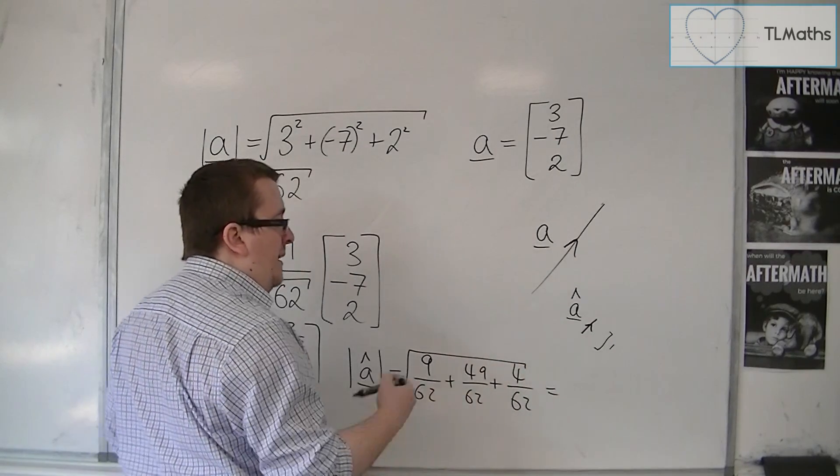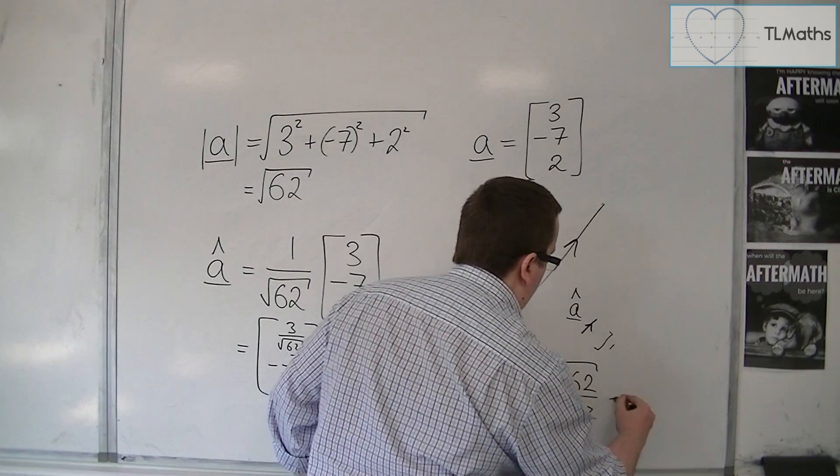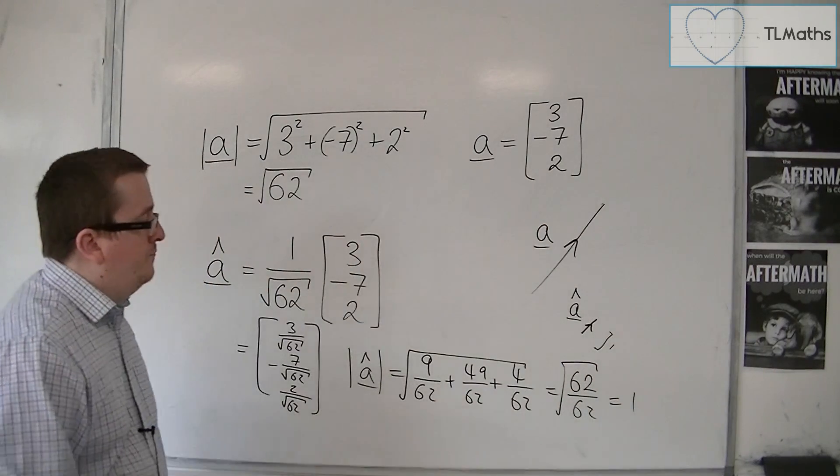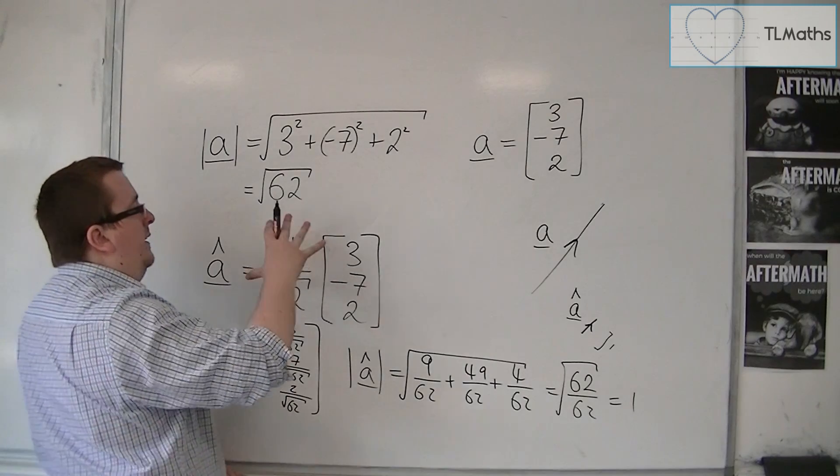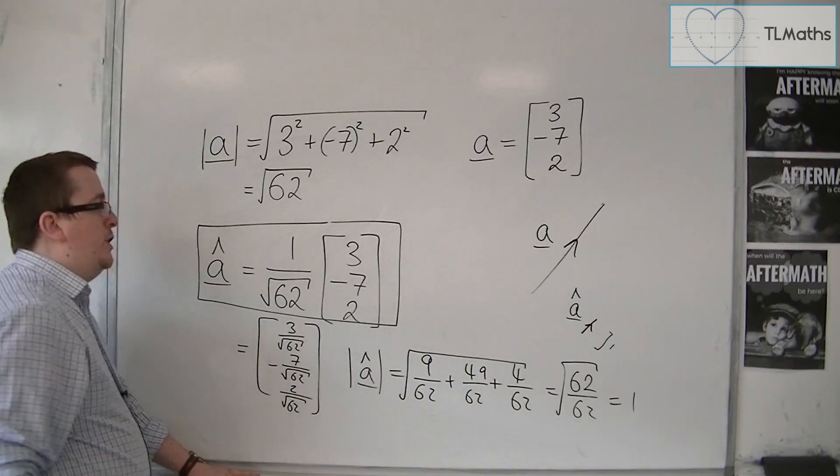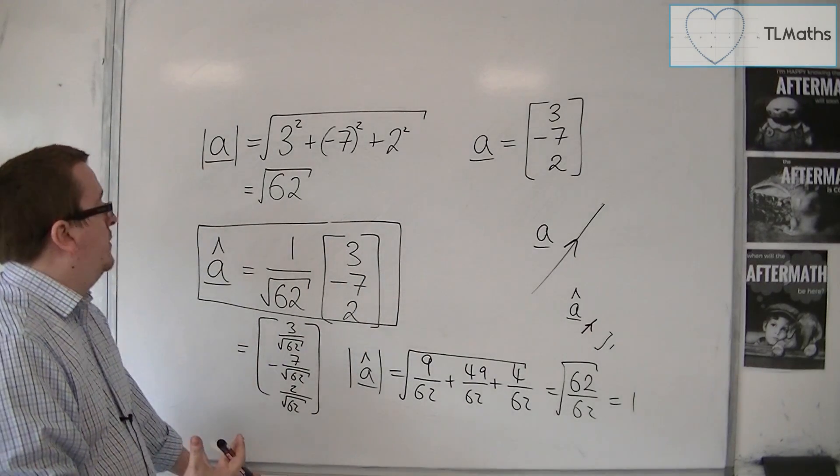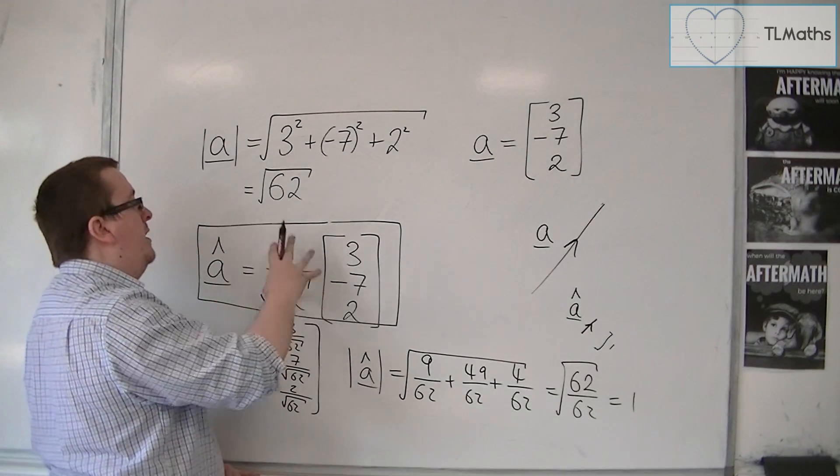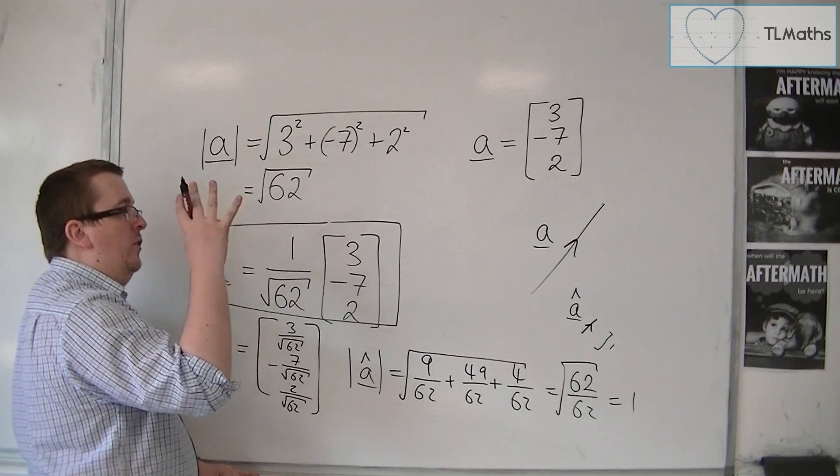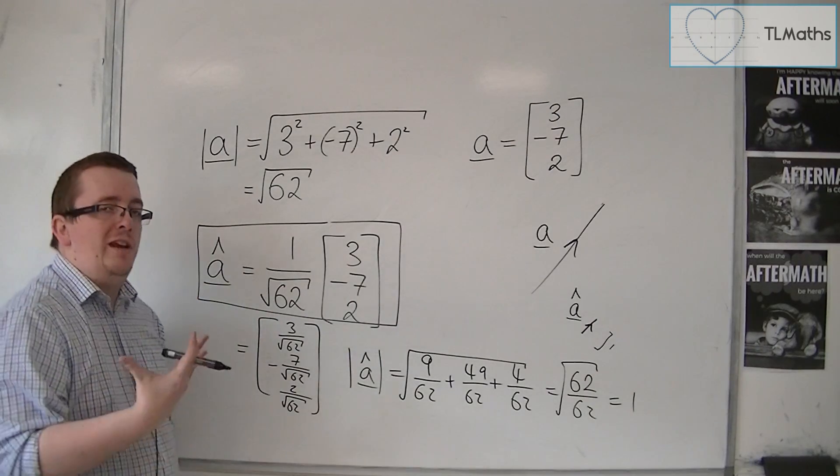9, 49, and 4 make up 62, so 62 over 62, square rooted, which is just 1. So we've made a vector that is going in precisely the same direction as A, but is now of unitary length. And by unitary, I mean it has length 1. So this is the unit vector going in the same direction as A.